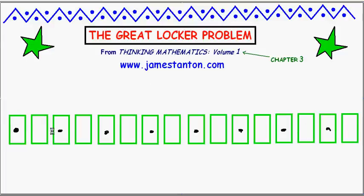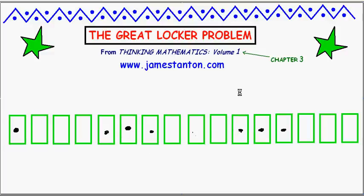Student number three comes down and changes every third locker — some will be open after this, some will be closed. Initially we get some patterns going on, but things start to get quite jumbled when the fourth student comes down, then the fifth student and so forth. The patterns you see start to become a little more chaotic.